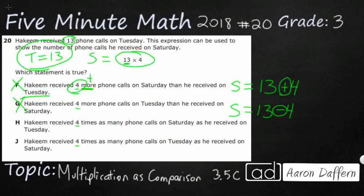So let's see this right here. Hakeem received four times as many phone calls on Saturday then he received on Tuesday. So we're looking at Saturday here. So we've got Saturday, and we need to receive four times as many phone calls on Saturday than Tuesday. Well, Tuesday is 13.